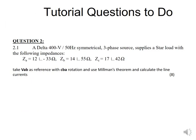We are now on the last slide of this lesson. Go to Tutorial One, question number two: you are given a delta source and a star-connected load with a negative phase sequence, Vab as your reference, and you must use Millman's theorem to calculate the line currents. Thank you — I hope you have learned from this session and we will see you again in the next lesson of Module One.